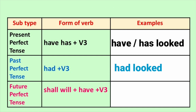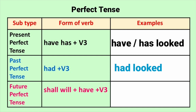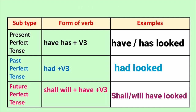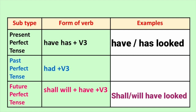Future Perfect Tense मधे Shall / Will + Have + V3. For example: Shall / Will + Have + Looked.